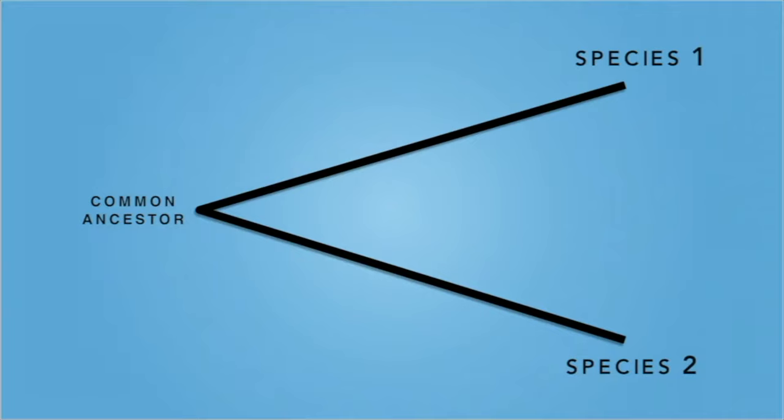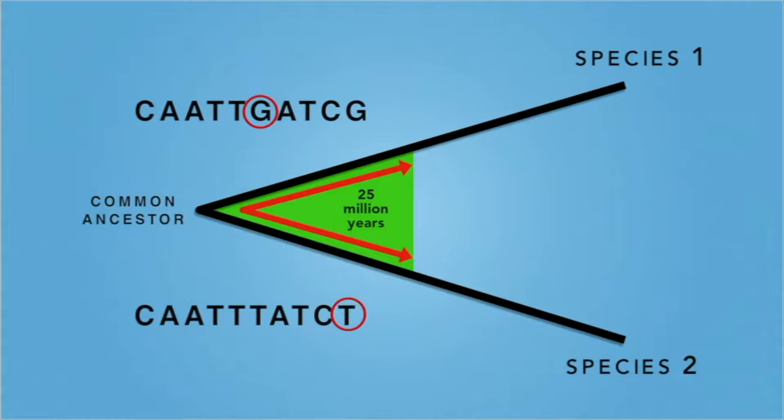In this example, two different species had a common ancestor sometime in the past. To determine when they diverged from a common ancestor, scientists use a molecular clock based on a gene that they know changes by two bases every 25 million years.